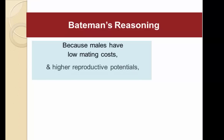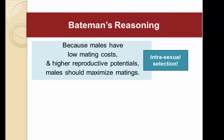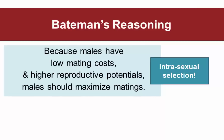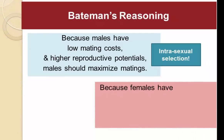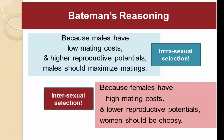Bateman's reasoning was that because males have low mating cost and higher reproductive potential, males should work to maximize their matings, leading to competition for access to females — what's called intrasexual selection. We see an example of male elephant seals battling it out to sire pups. On the other hand, because females have such high mating cost and lower reproductive differentials, females should be choosy — what Darwin's language suggested — and this is what's called intersexual selection.